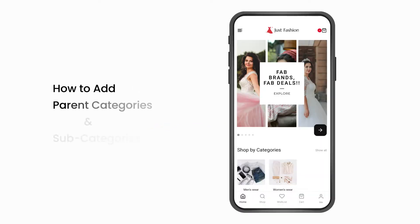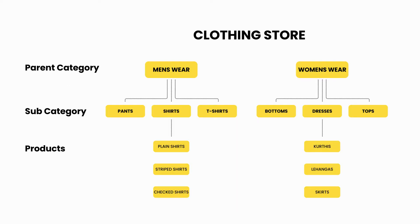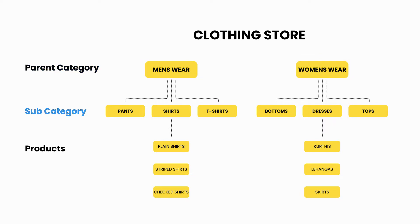In this video you will learn how to add parent categories and subcategories. Categories are used to organize the products in your store. For example, if you run a clothing store, the parent categories would be menswear and womenswear.